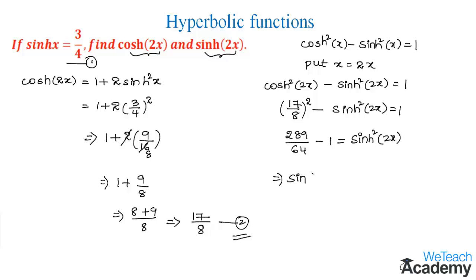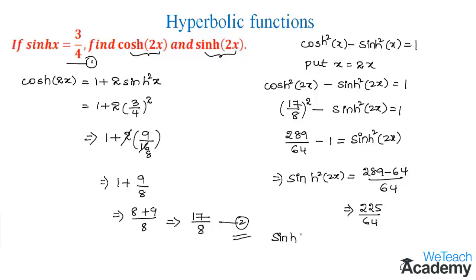Simplifying, hyperbolic sine squared 2x equals 289 minus 64 divided by 64, which is 225/64. Therefore, hyperbolic sine 2x equals the square root of 225/64, which equals 15/8.